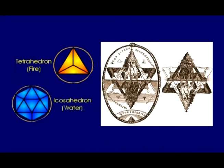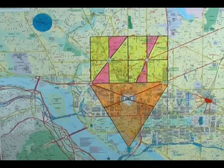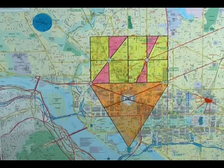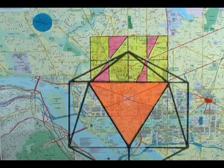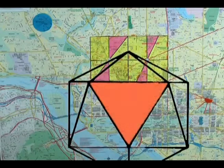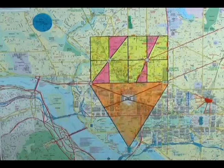The union of opposites is being represented by the element of water, the icosahedron, and the element of fire, the tetrahedron. Looking at the map, shaded in orange is 1/20th of an icosahedron, made by the layout in Washington.